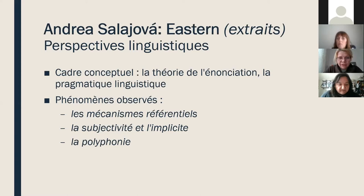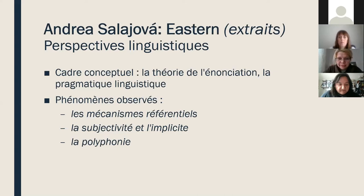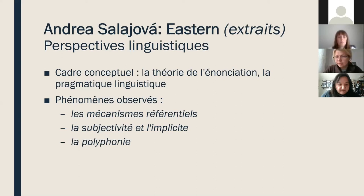On va aborder en partie aussi le domaine de la linguistique pragmatique, en complément, parce que ce qui va nous intéresser ce seront trois choses : les mécanismes référentiels, donc le problème de la référence ; deuxièmement, l'implicite et les sens implicites ; et en relation aux significations implicites, l'expression de la subjectivité dans le texte. Et si on y arrive, on va aborder peut-être le concept de polyphonie.